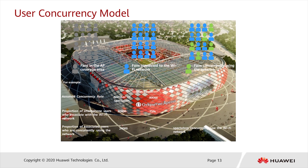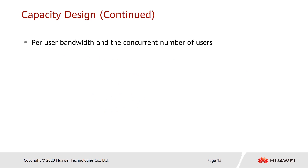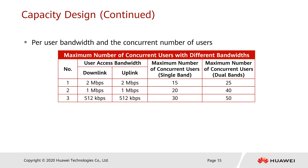However, in indoor office scenarios, the concurrency rate can be determined by the customer. If the customer does not specify a concurrency rate, we can plan it as 50% or even 100%. When 512 kilobits per second bandwidth is required per user, 30 concurrent users can be supported on a single frequency band (2.4 GHz or 5 GHz) and 50 on dual bands. With 1 megabit per second, these values change to 20 and 40 respectively.